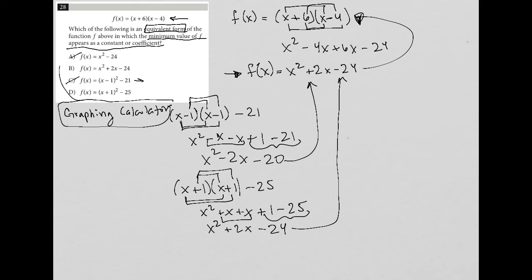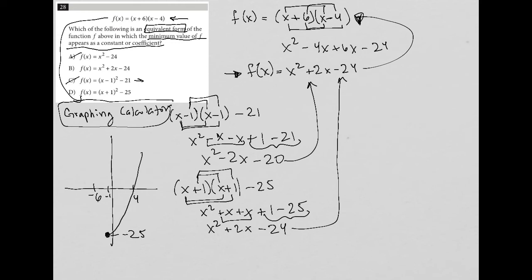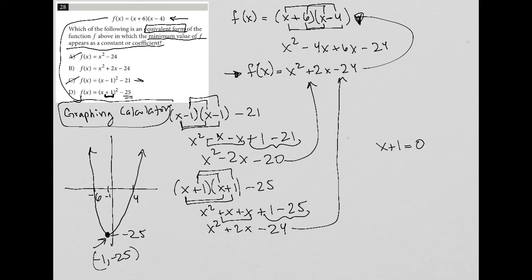Throw the original function into the graphing calculator. You'll find the parabola has x-intercepts at negative 6 and positive 4, a vertex at negative 1 comma negative 25, and the graph opens upward. The minimum is at the point negative 1, negative 25. Looking at choice D, we see negative 25 as a constant. And remember — insiders lie: although it says plus 1 inside the parentheses, setting x plus 1 equal to 0 gives x equals negative 1. That's where the negative 1 vertex coordinate comes from.